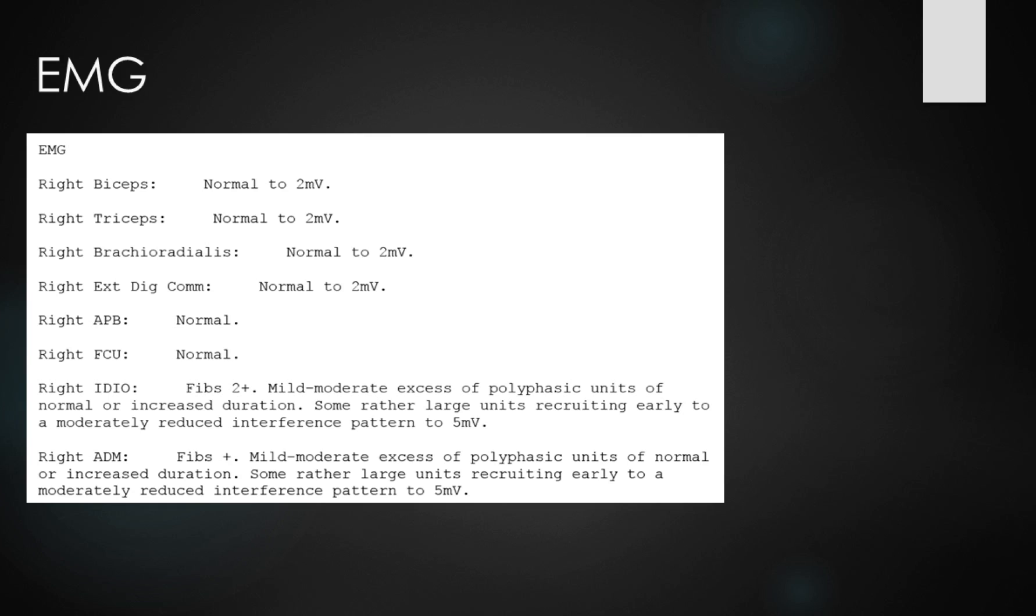Let's move on to the EMG now. The right biceps is normal, that covers C5, C6. Triceps, C6, C7, C8 is normal as well. Brachioradialis is normal, C5, C6. EDC, C7, C8 is also normal. APB, C8, T1 and that's normal. FCU, interestingly, is normal.